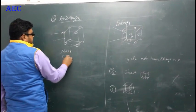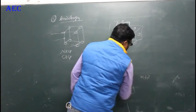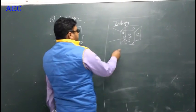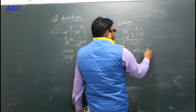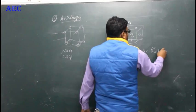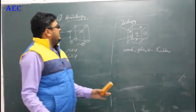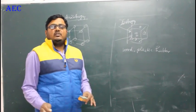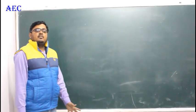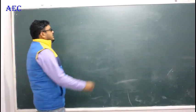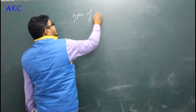Examples of crystalline solids are NaCl, CsCl, graphite, and diamond. Examples of amorphous solids are wood, plastic, and rubber. These are the two basic types of solid. Now let us discuss the types of crystalline solids.